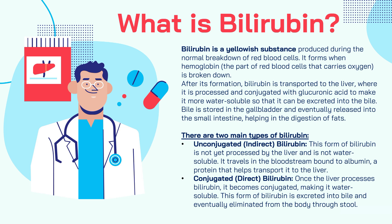There are two main types of bilirubin. First, the unconjugated or indirect form — this is bilirubin not yet processed by the liver, is not water soluble, and travels in the bloodstream bound to albumin, a protein that helps transport it to the liver. Second, the conjugated or direct bilirubin — once the liver processes bilirubin it becomes conjugated, making it water soluble. This form is excreted into the bile and eventually eliminated from the body through the stool and small amounts through the urine.